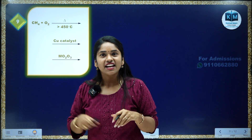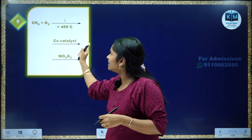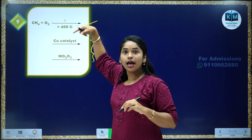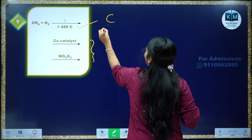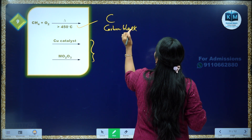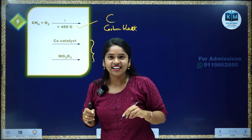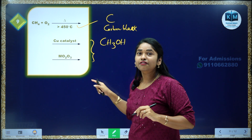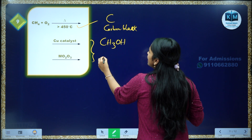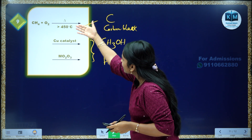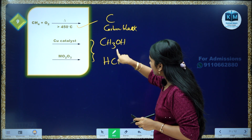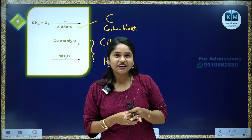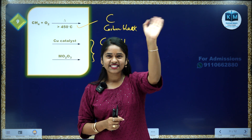When you take methane and do combustion: if you heat above 450 degrees Celsius, you get carbon black — only carbon. But when you treat in the presence of copper as a catalyst, your product is methanol. And if you treat with molybdenum oxide as a catalyst, then methanal (aldehyde) is your product. So the same reaction with different conditions gives different products: carbon black, methanol, or methanal. I hope you got clarity on all nine different reactions. My name is Komali, I am your chemistry mentor. Thank you so much for watching. See you in the next video. Bye, love you.